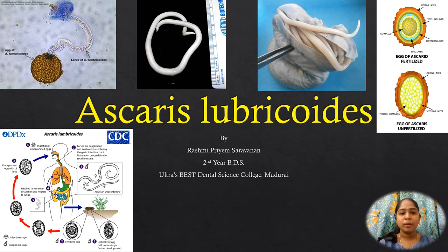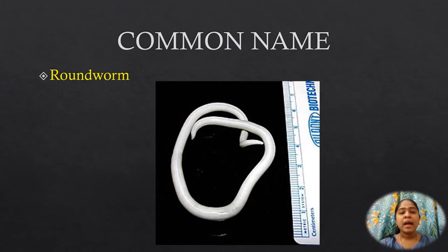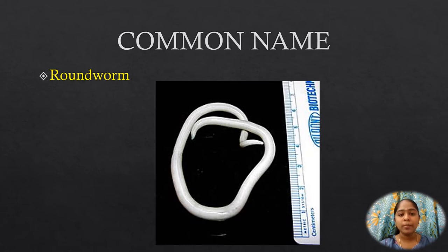Hello and welcome to today's topic: Ascaris lumbricoides. Ascaris lumbricoides is commonly known as the roundworm or the giant roundworm, belonging to the phylum Nematoda. This is the most common parasitic worm in humans.